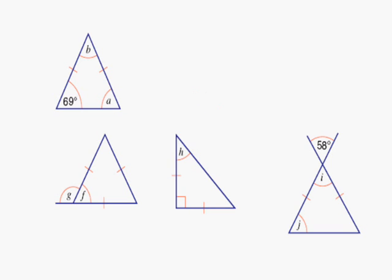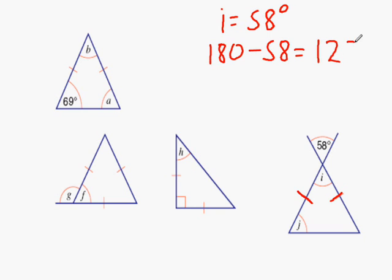You know what angle I is because it is opposite to the angle which is 58 degrees, so it is 58 degrees. We can figure out J by taking 58 away from 180, because this triangle is an isosceles triangle, and then we divide this by 2, which equals 61 degrees, meaning J equals 61 degrees.